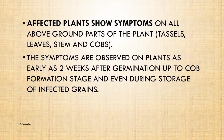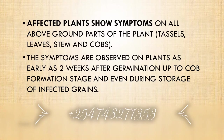The affected plant symptoms are observed on all above-ground parts of the plant — that is the tassels (the head), the leaves, the stems, and the cob. Symptoms are observed on plants as early as two weeks after germination, up to cob formation stage, and even during storage of grains.